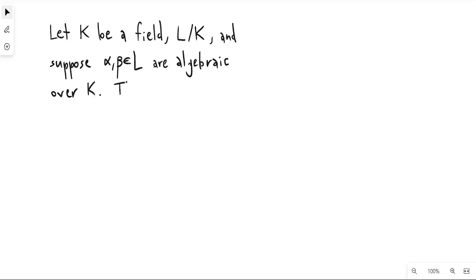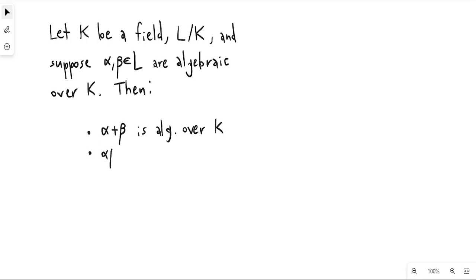So the two properties that I want to prove are: first, that the sum of alpha and beta is algebraic over k, and also that the product of alpha and beta is algebraic over k.